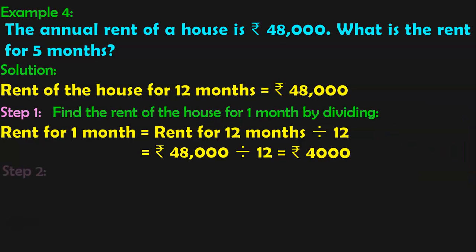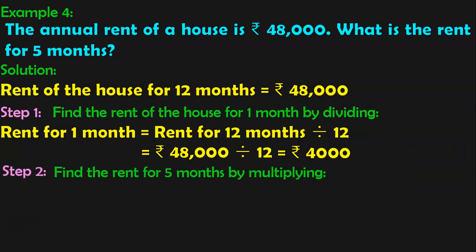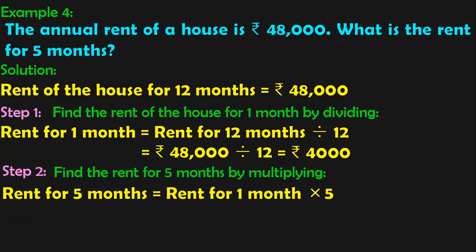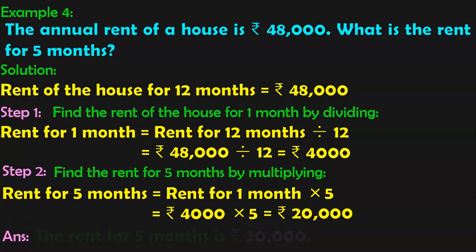So, we do multiplication. Step 2: Find the rent for 5 months by multiplying. Rent for 5 months is equal to rent for 1 month multiplied by 5. Rent for 1 month is Rs. 4,000, so Rs. 4,000 into 5 is Rs. 20,000. The rent for 5 months is Rs. 20,000.